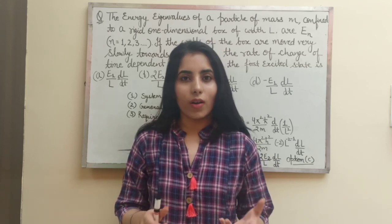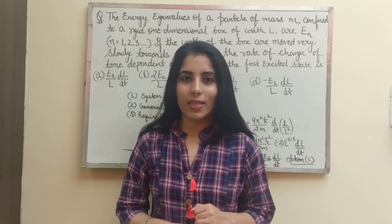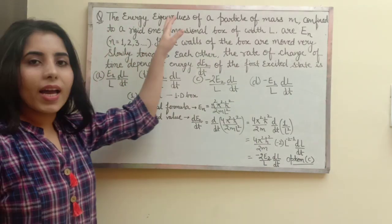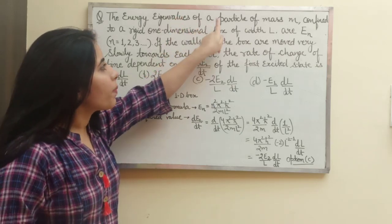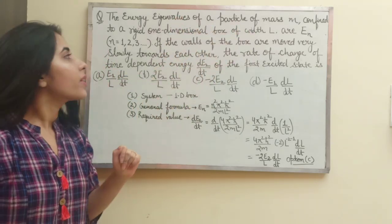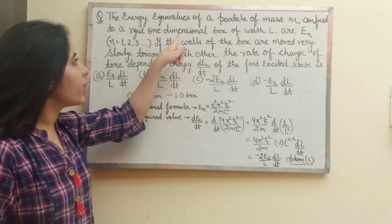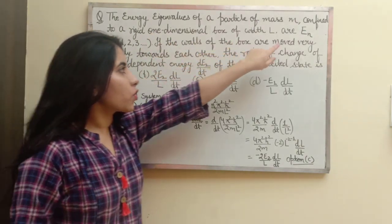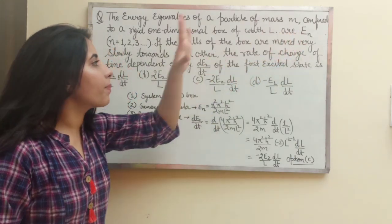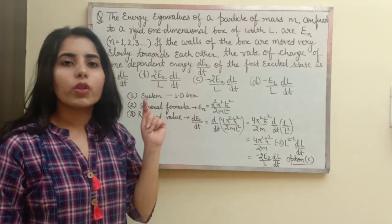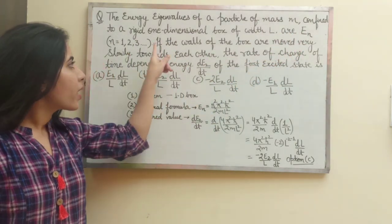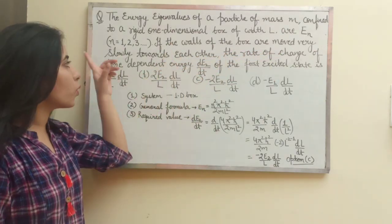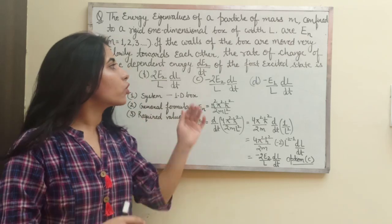So guys, our question is: the energy eigenvalues of a particle of mass m confined to a rigid one dimensional box of width L are En. These are the energy eigenvalues which have been mentioned for n equals 1, 2, 3 and so on. Now, if the walls of the box are moved very slowly towards each other, this is going to be a very important statement in this question.